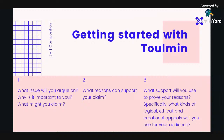To get started with Tolman, you have different steps. Number one: ask what issue will you argue on, why is it important to you, and what might you claim. Second: figure out what reasons you can use to support your claim. Third: ask what support you will use to prove your reasons — like evidence. Specifically, what kinds of logical, ethical, and emotional appeals will you use for your audience? Using all three is optimal, but especially with argument, you need to strongly rely on the logical aspect.